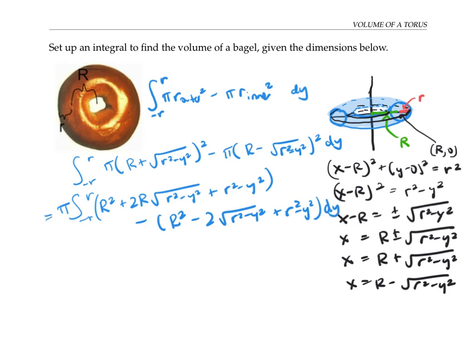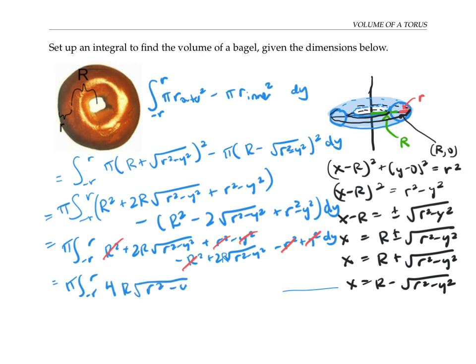If I factor through the negative, I see that almost everything cancels out. I'm just left with π times the integral of 4R√(r² - y²) dy. Let me pull out the 4R because R is a constant with respect to y, and this is what I need to integrate.